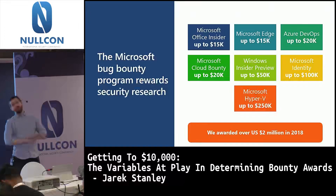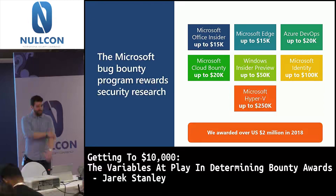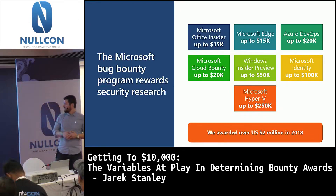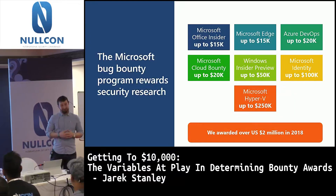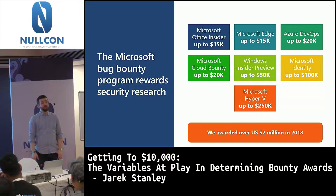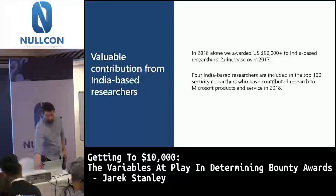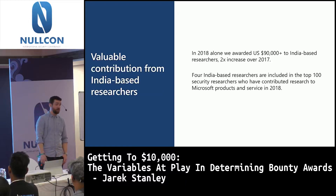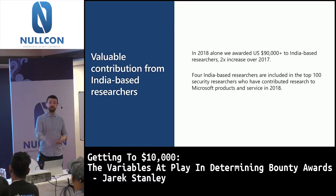Our bounty program covers a bunch of different Microsoft products including Office, Windows, as well as Cloud services — also known as online services — Azure DevOps, and Office 365. Rewards range from $500 to $15,000 for Office Insider, up to $50,000 for Windows vulnerabilities, and up to $250,000 for hybrid virtualization and other really complex, high-priority issue areas. Overall, across all our bounty programs just this last year, we paid over $2 million. Indian researchers make a really big contribution — we paid over $90,000 in bounties to Indian researchers, twice the amount from last year, and four Indian-based researchers made our top 100.